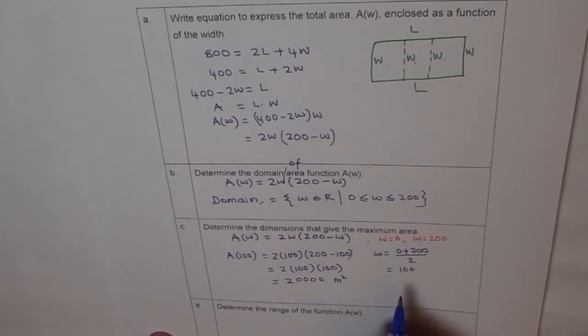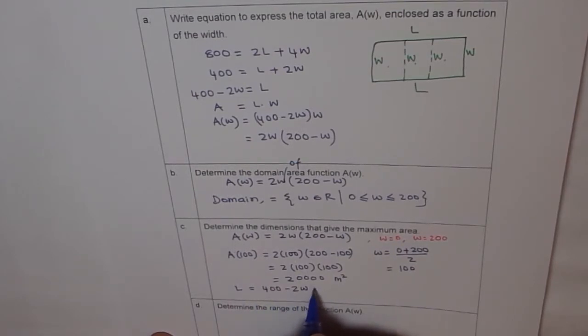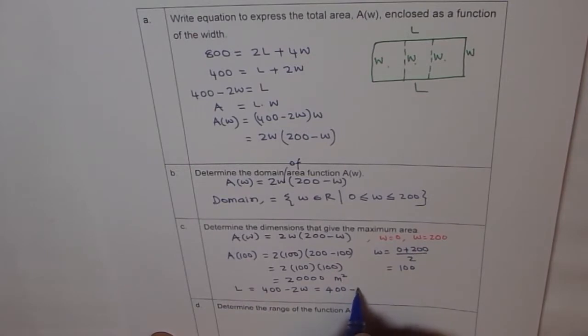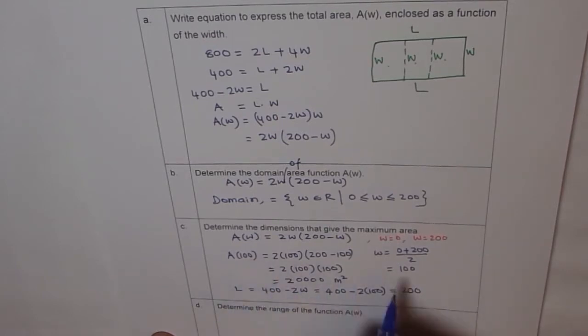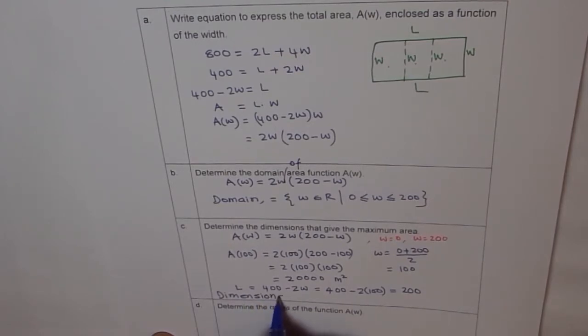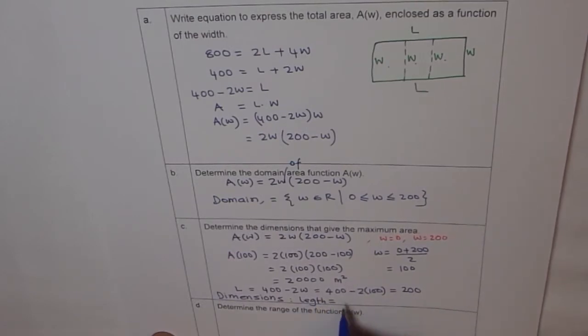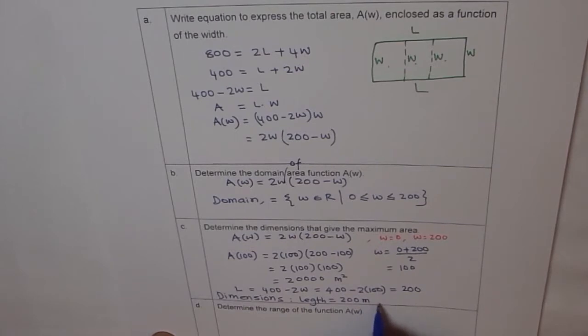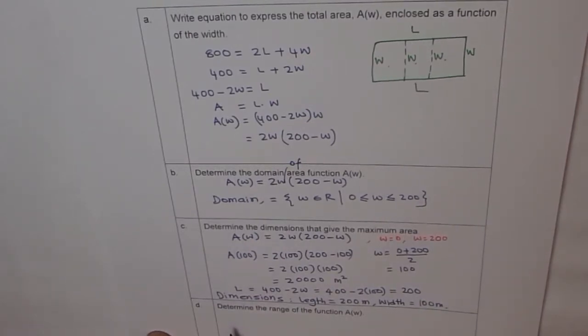Now, if width is 100, what is length? Length is equals to 400 minus 2 width, which is 400 minus 2 times 100, which is 200. So the dimensions are length equals to 200 meter and width equals to 100 meter. So that's our dimension.